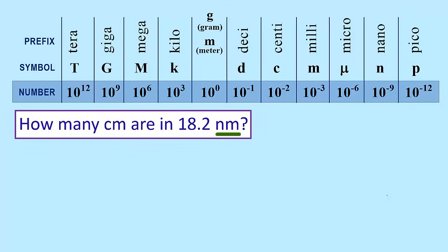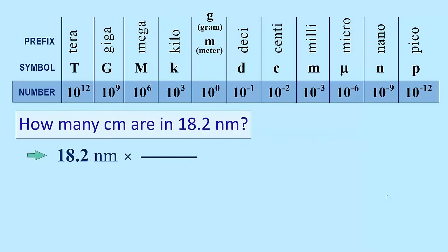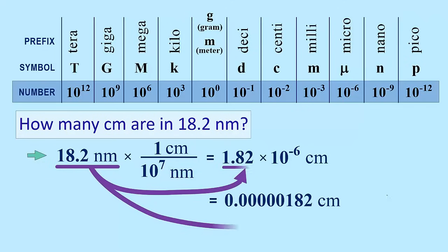Let's try a problem where we are converting from a smaller unit, nanometers, to a larger unit, centimeters. The setup is the same as before. Write down what is given. Multiply by a conversion factor with the unit given on bottom. Wanted unit on top. Large unit gets 1. Number for smaller unit is determined by subtracting the exponents represented by the prefixes. Nanometer cancels, leaving centimeters. 18.2 nanometers equals 1.82 times 10 to the negative 6 centimeters, or 1.82 millionths of a centimeter. But the purpose of scientific notation is to forget about dealing with lots of zeros, so we can ignore this.